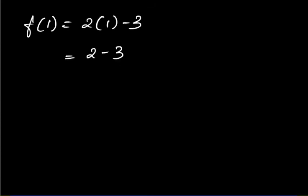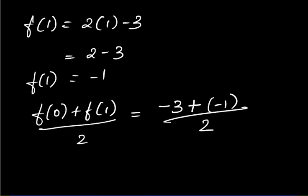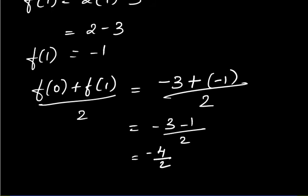f(1) = 2(1) − 3 = 2 − 3 = −1. f(0) = 2(0) − 3 = −3. So [f(0) + f(1)] / 2 = (−3 + (−1)) / 2 = (−3 − 1) / 2 = −4 / 2 = −2.